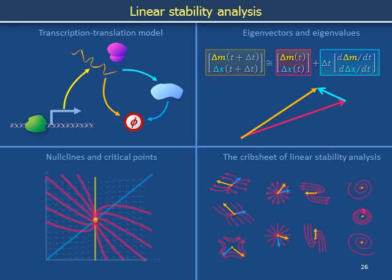In this video, we classify the qualitative shapes of trajectories that can be obtained from two-dimensional systems amenable to the eigenvector eigenvalue analysis described in the previous video.